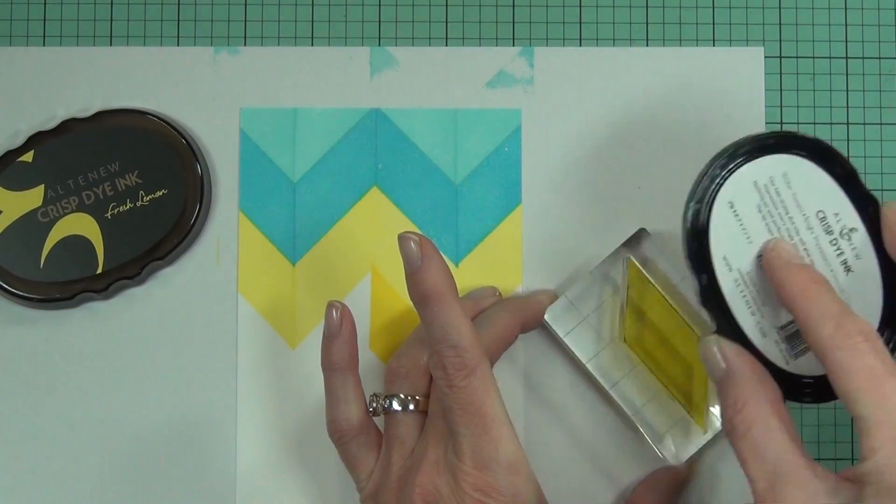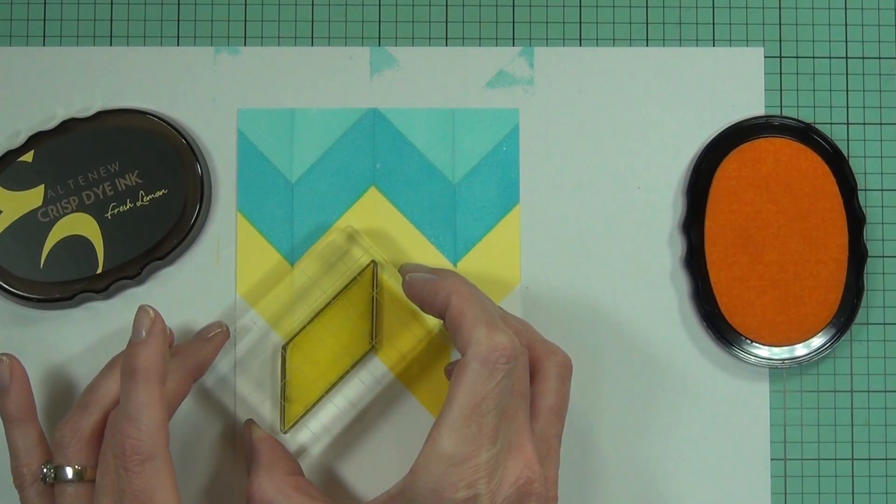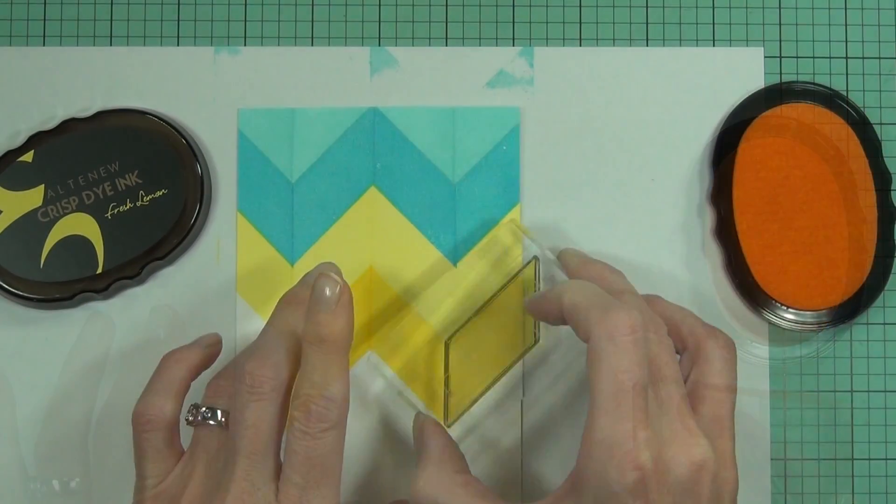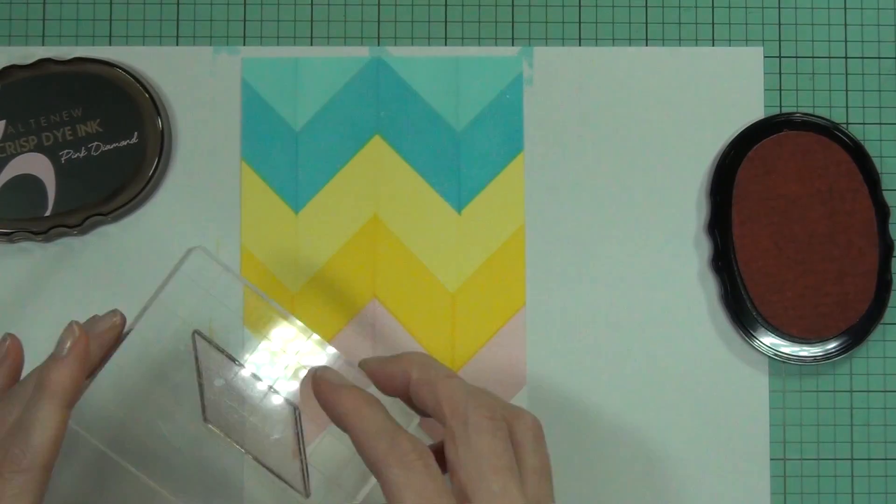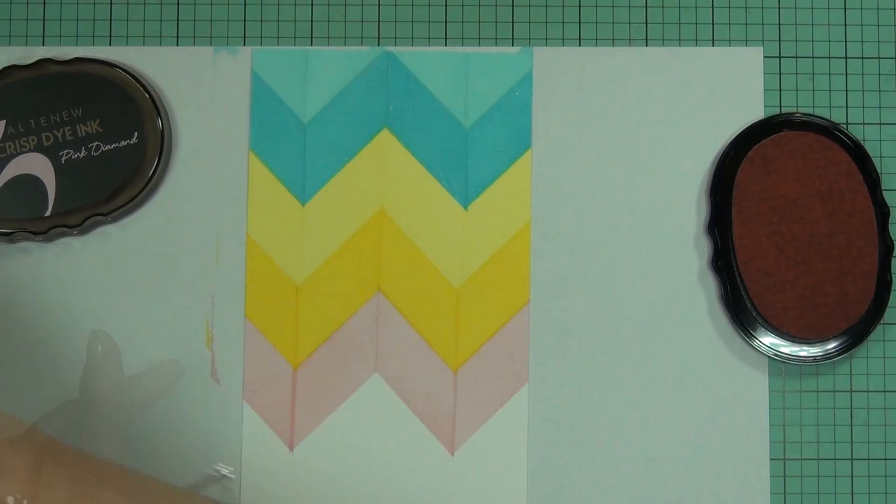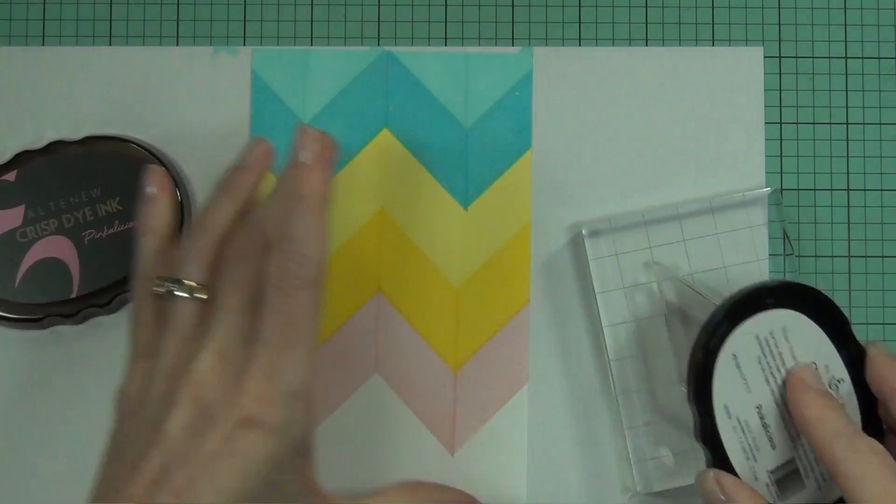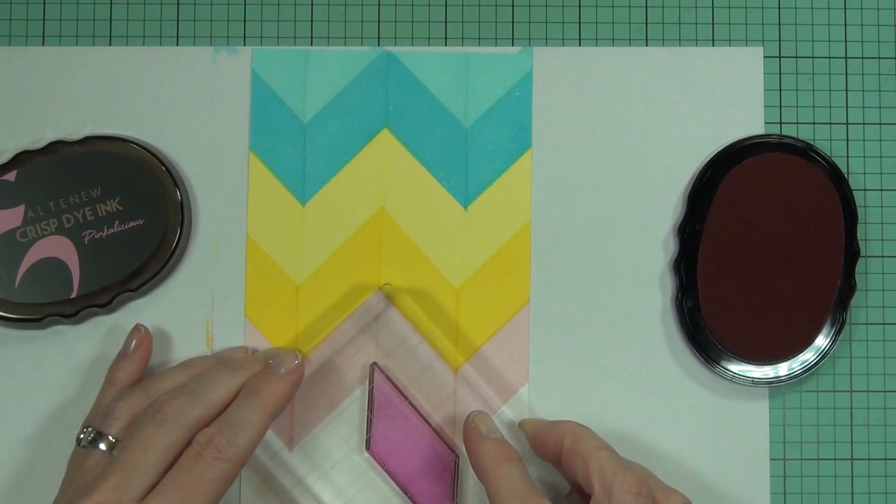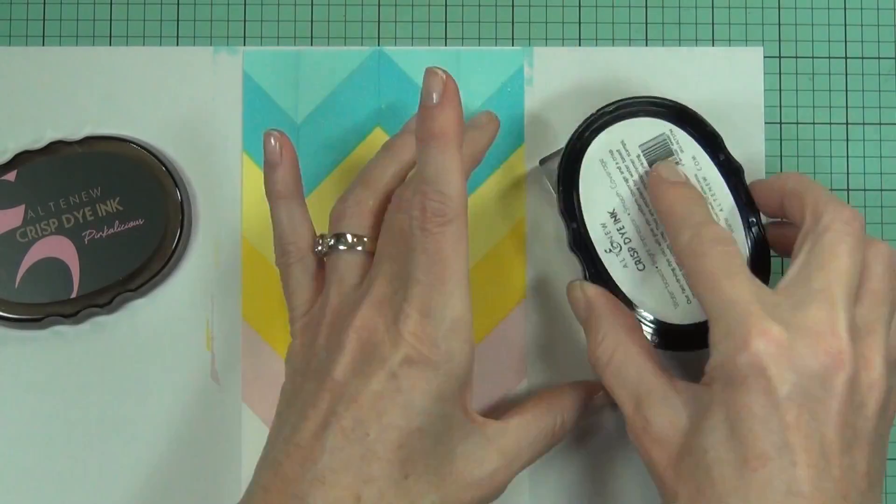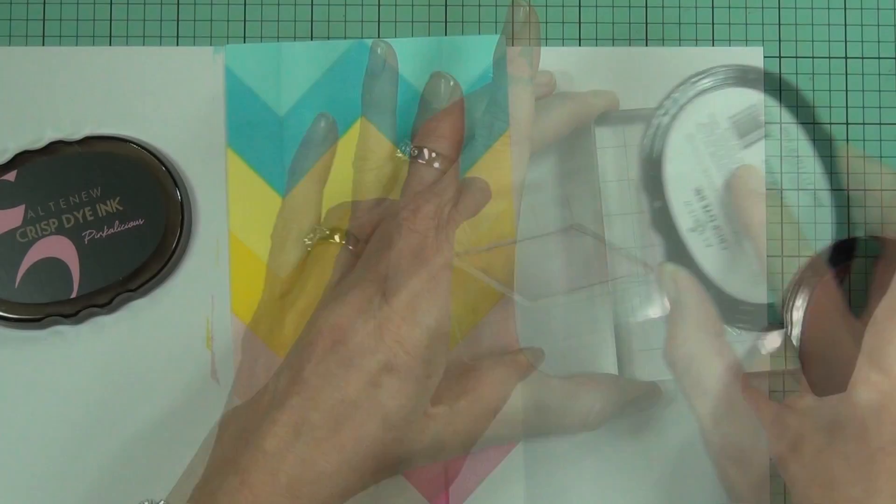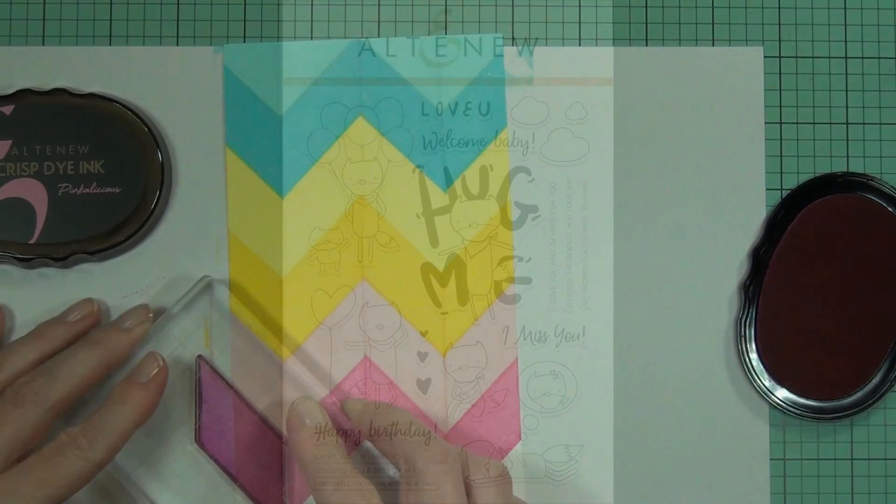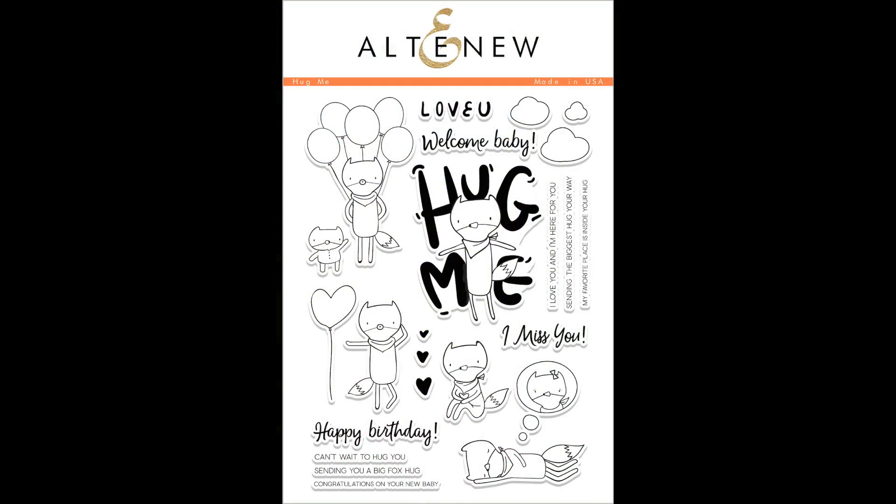This is the citrus burst and then I followed that with the fresh lemon. The pinks are the pink diamond and my favorite, which is the pinkalicious. I like these pinks because they don't really have that real purple hue that a lot of pinks do have. That's my chevron background.